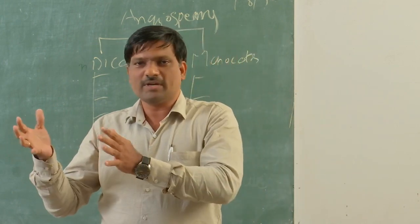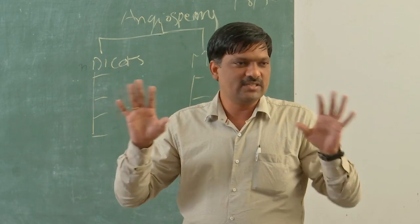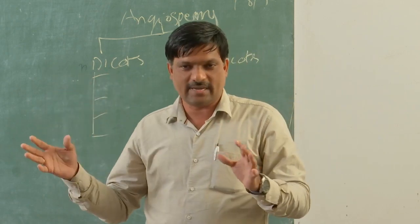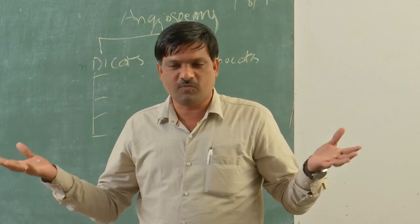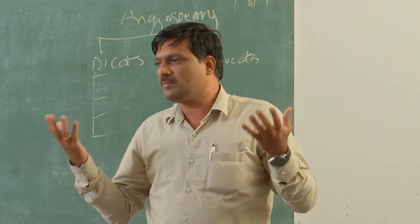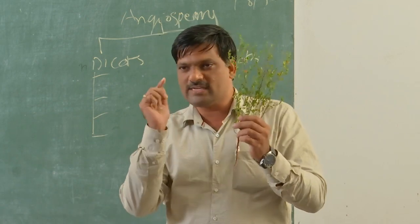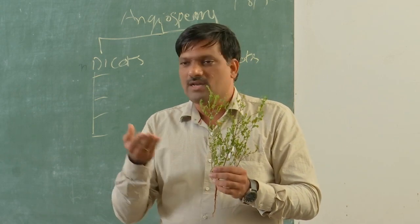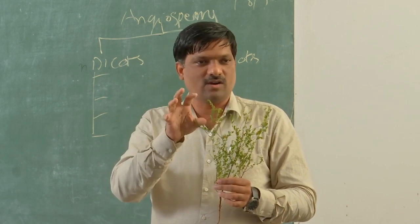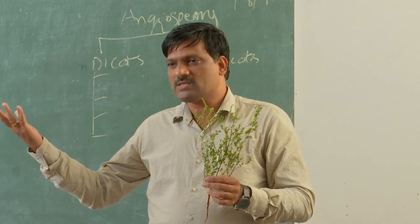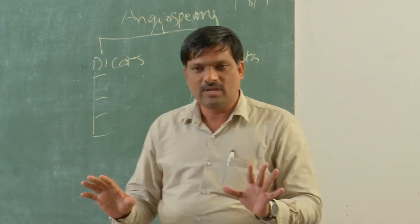Other important characters: in flowers, if there are four or five parts in each whorl, that is a dicot character; three parts is a monocot character. In anatomy, if you cut a stem and see ringed vascular bundles, it is a dicot; if the vascular bundles are scattered, it is a monocot.